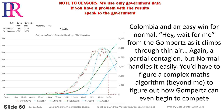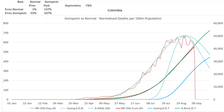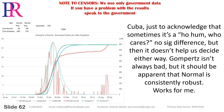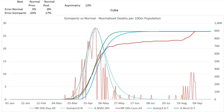Colombia — an easy win for normal. Gompertz climbs through thin air. Again a partial contagion, but normal handles it easily. You'd have to figure a complex mass algorithm beyond me to figure out how Gompertz could even begin to compete. Cuba — just to acknowledge that sometimes it's a ho-hum, who cares. No significant difference, but then it doesn't help us decide either way. Gompertz isn't always bad, but normal is consistently robust. And that works for me.